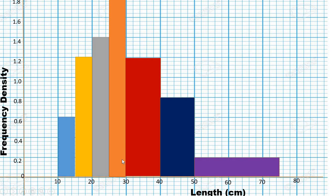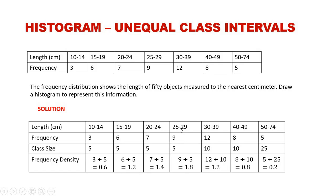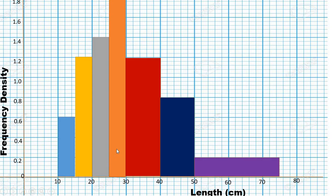For 25 to 29, the class size is still 5 but the frequency density is 1.8 — the tallest bar so far — and the width is still 5 on the scale.